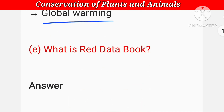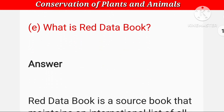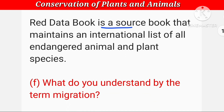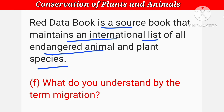What is Red Data Book? Red Data Book is a source book that maintains an international list of all endangered animals and plant species — जिसमें जितने भी ऐसे animals और plant species हैं जिनका जीवन खतरे में है, उनकी list है। यह पूरे world की list है।